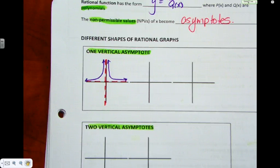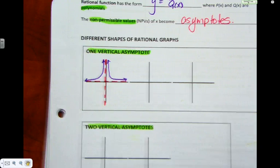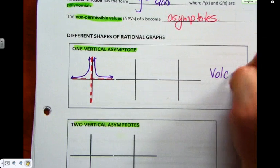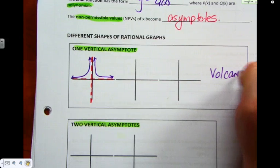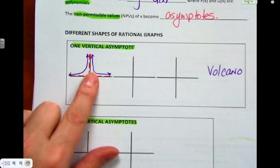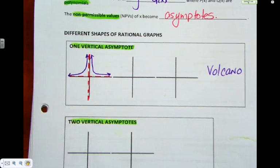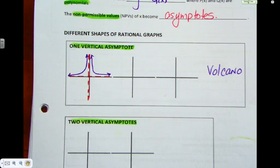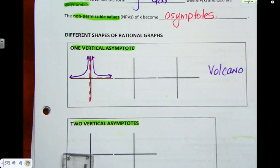Who remembers from last year what we call this graph? This is the volcano graph — because it looks like a volcano and the asymptote looks like lava pouring out. We categorize rational graphs by the number of vertical asymptotes, so this is called volcano: it has one vertical asymptote.